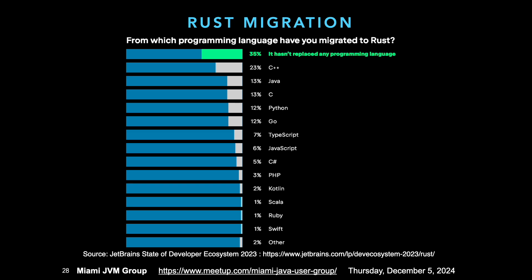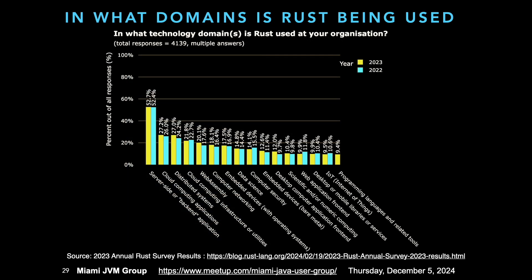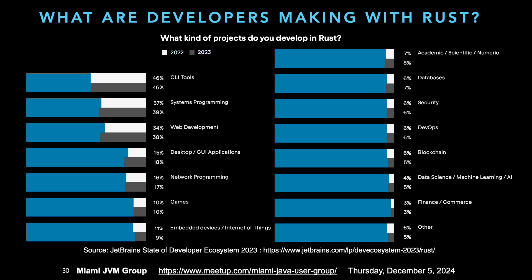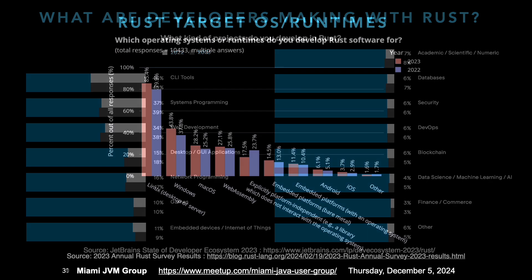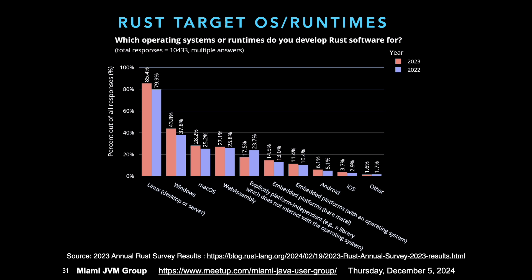Looking at domains where Rust is used: server-side, cloud computing, distributed computing, infrastructure, utilities, WebAssembly, cloud security, data science, web applications, IoT, and even languages implemented in Rust. Server-side is currently the biggest chunk. As for what developers are making, a lot of command-line tools are being built in Rust — they run really quickly. Then systems and web. The vast majority of deployment targets right now is Linux server and desktop, followed by Windows and macOS, then WebAssembly.